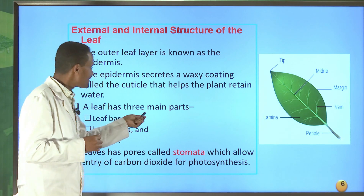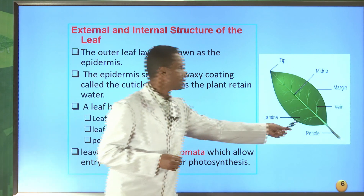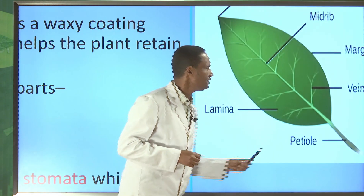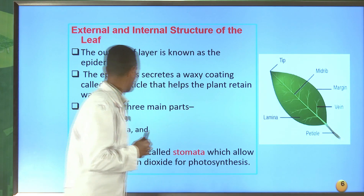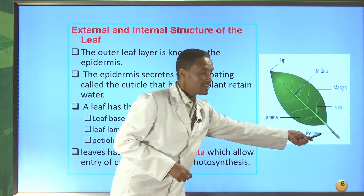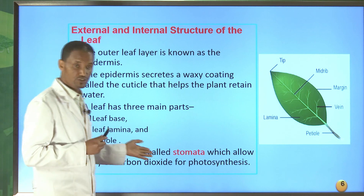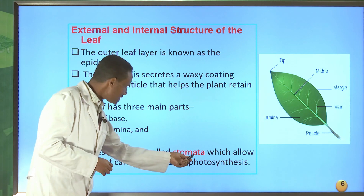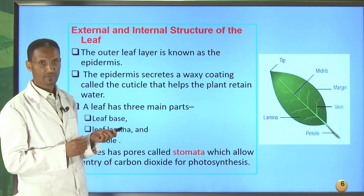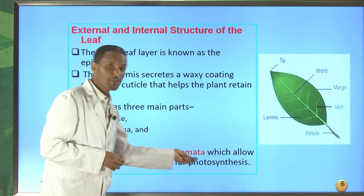A leaf has three main parts from its external structure. These are the leaf base, which is found at the base of the leaf; the leaf lamina, which is the surface of the leaf; and the petiole. The leaf also has pores called stomata. Through these stomata, carbon dioxide enters into the leaf for the process of photosynthesis.